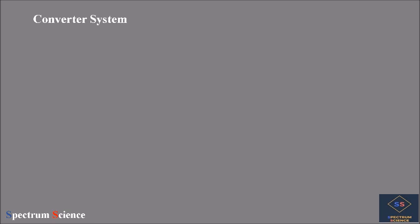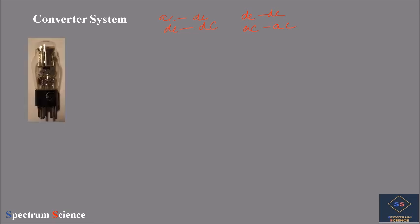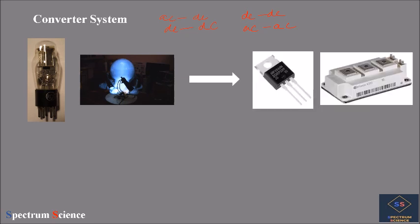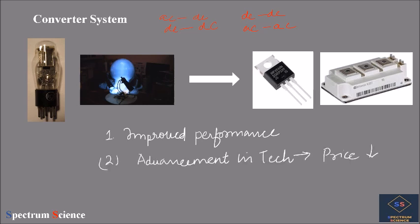A converter system consists of a device that converts AC to DC, DC to AC, DC to DC, or AC to AC. Conventional switches like the thyratron or mercury arc rectifiers have now been replaced by more advanced semiconductor devices like MOSFET and IGBT, which have improved performance and are relatively cheaper.